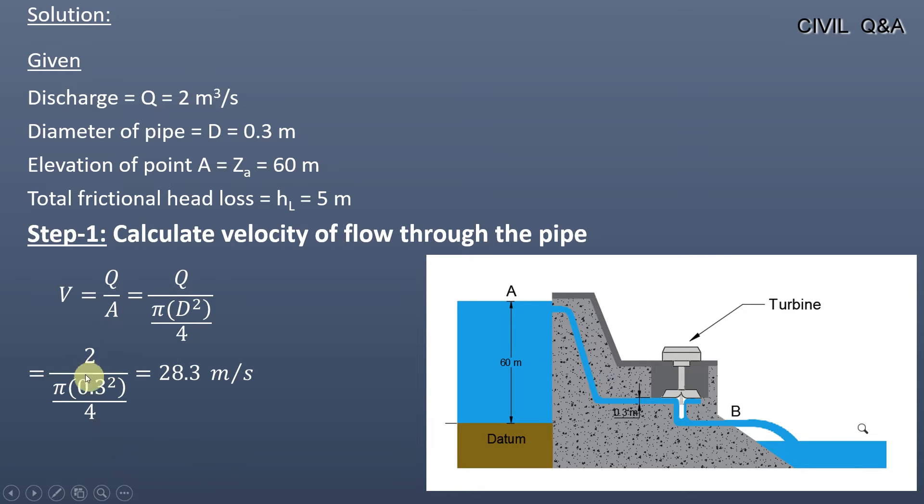Putting values in the above equation, we get the velocity of flow through the pipe as 28.3 meters per second.